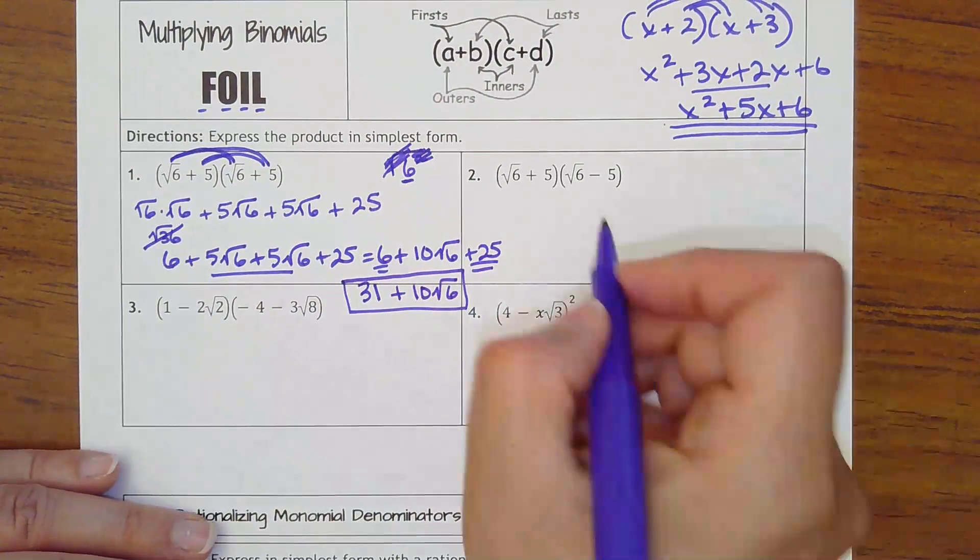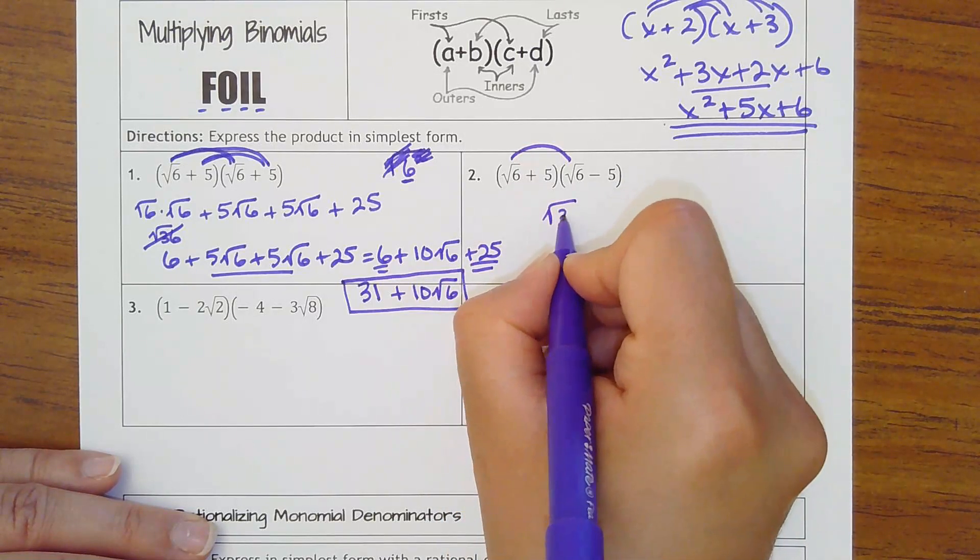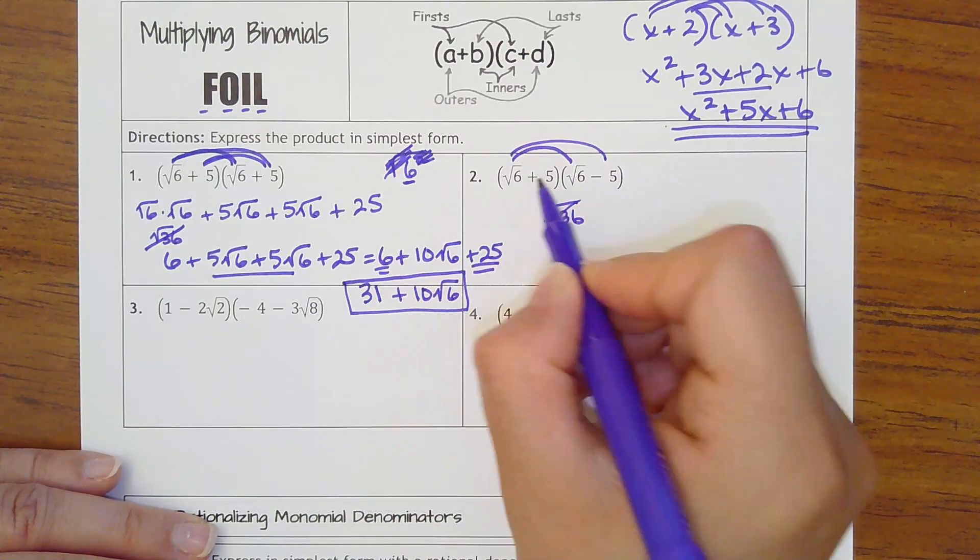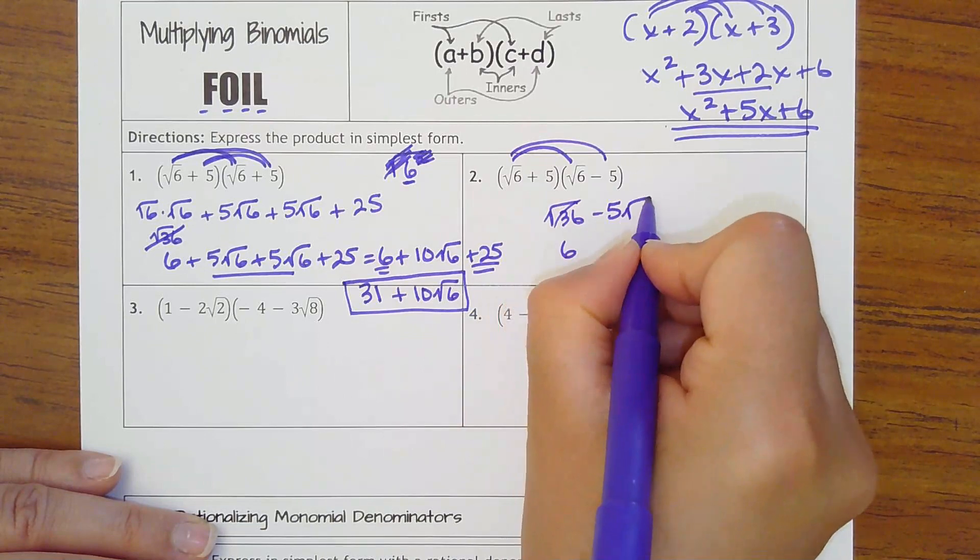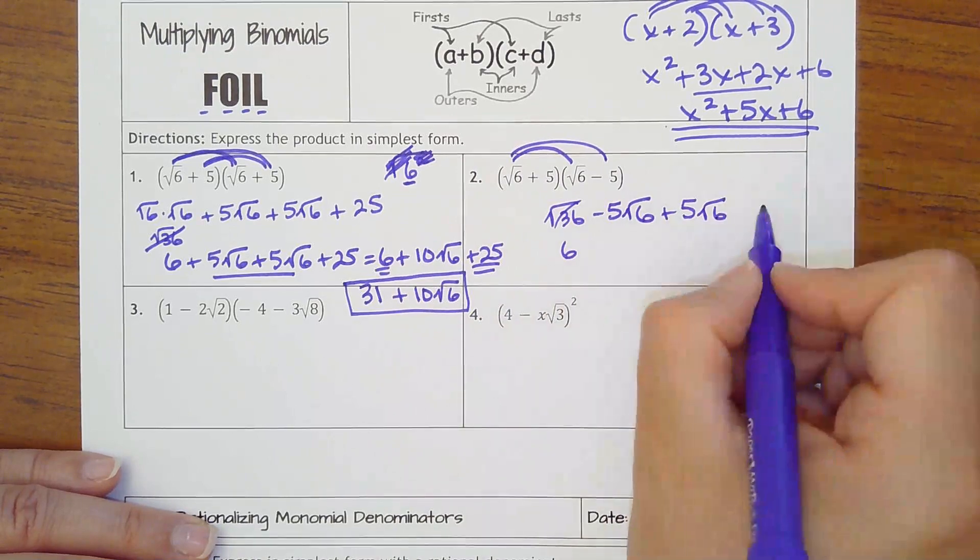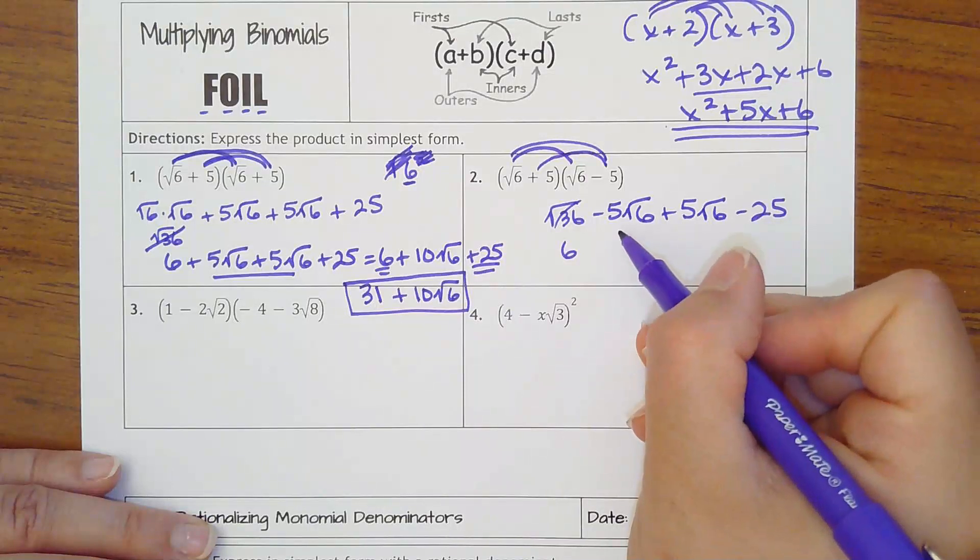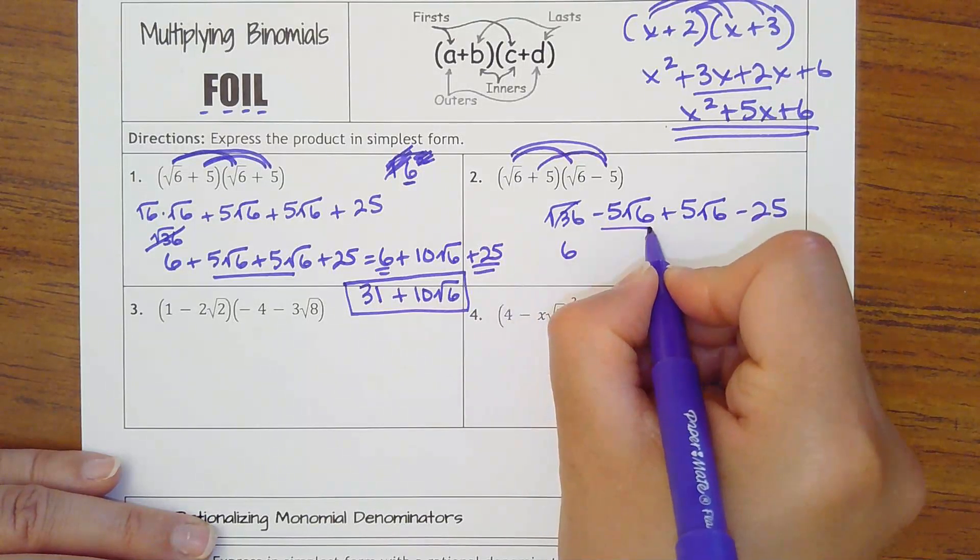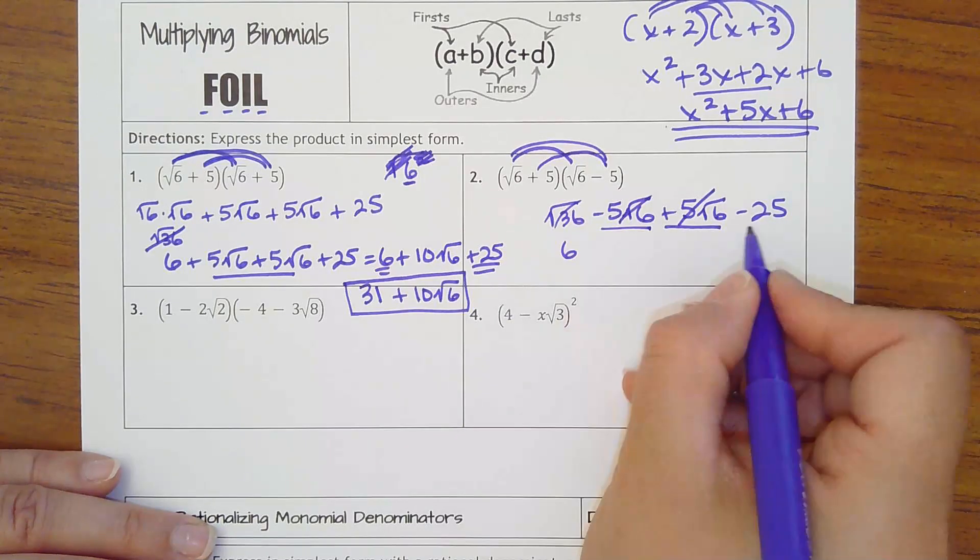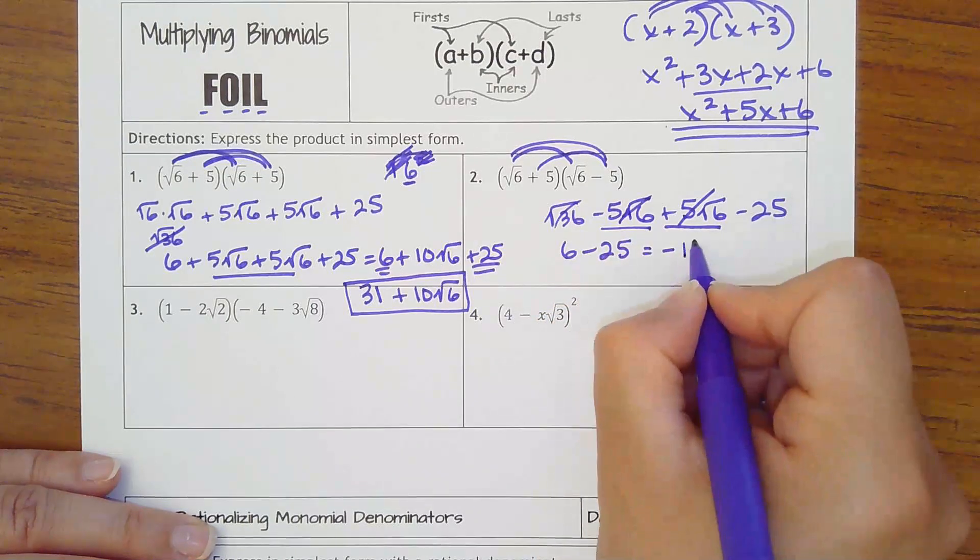Number 2. Let's see if we can go a little faster. First, square root of 6 times square root of 6. That's negative 5 times square root of 36, which I know is really just going to be 6. Outers is negative 5 times square root of 6, which would be negative 5 square roots of 6. Inners is positive 5 times square root of 6. And then last is a positive 5 times a negative 5. What's going to happen here is you have a negative 5 square roots of 6 plus 5 square roots of 6. Those are going to make 0 because negative 5 plus 5 makes 0. So 6 minus 25, which is negative 19.